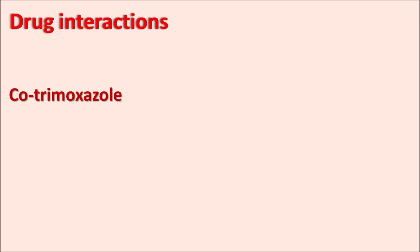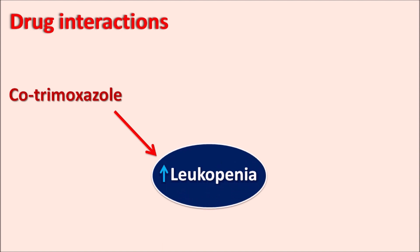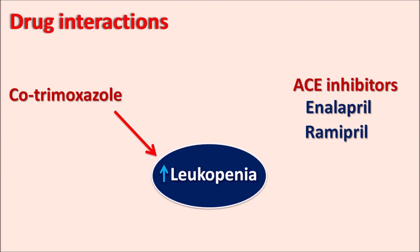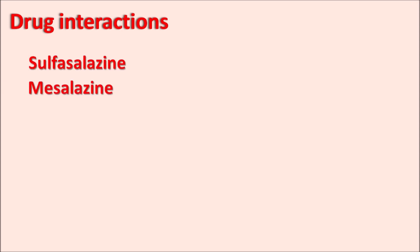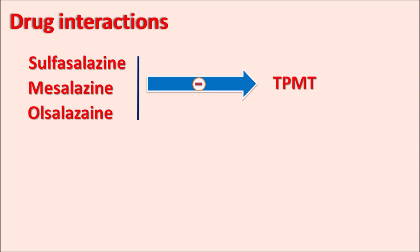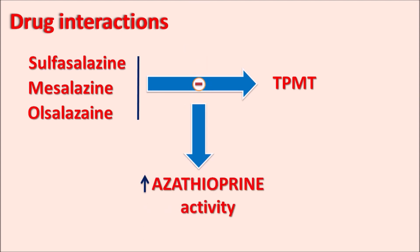Regarding drug interactions: cotrimoxazole (sulfamethoxazole plus trimethoprim) can cause leukopenia, and ACE inhibitors (drugs ending in '-pril,' such as enalapril and ramipril) can also increase leukopenia, so combining these with azathioprine can further worsen leukopenia. Anti-inflammatory aminosalicylates — such as sulfasalazine, mesalazine, and olsalazine, used to treat inflammatory bowel disease — can inhibit TPMT activity, reducing azathioprine metabolism and thereby increasing the risk of myelosuppression.